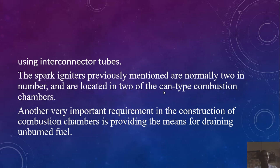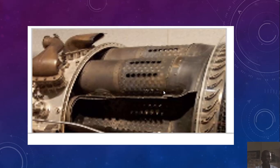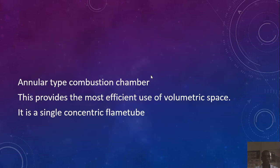The construction of the combustion chamber also provides means for draining unburnt fuel. We can see clearly from the diagram that it is made up of multiple chambers — two up to sixteen — and each section has a stainless steel perforated liner.